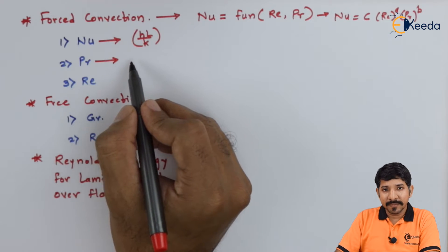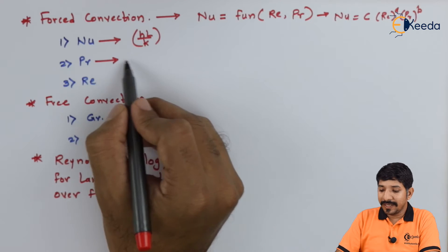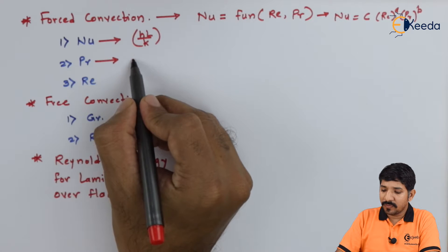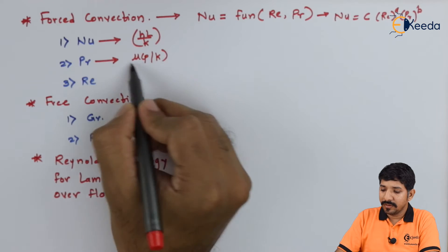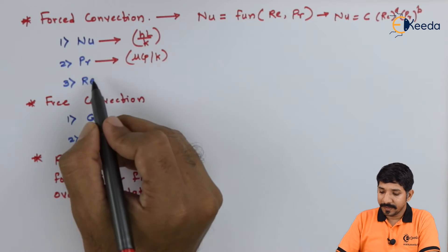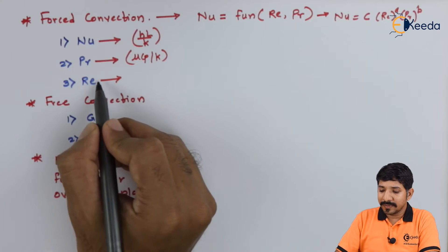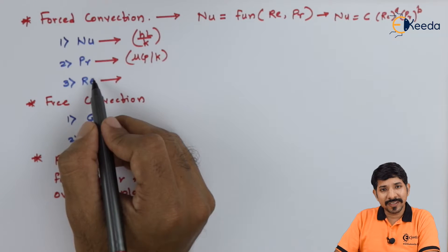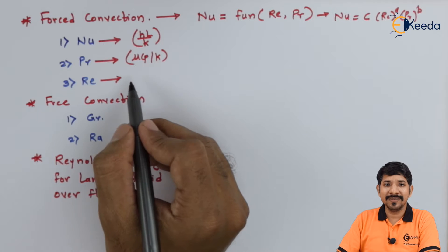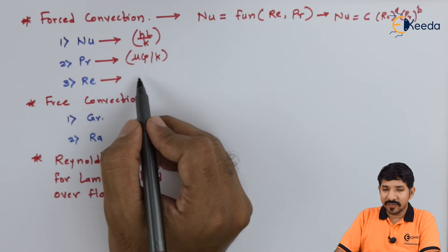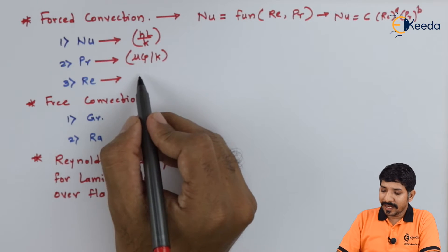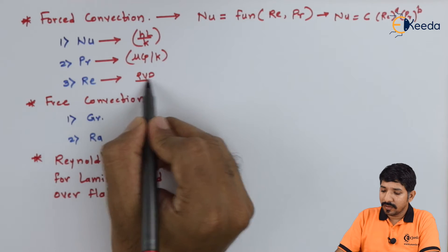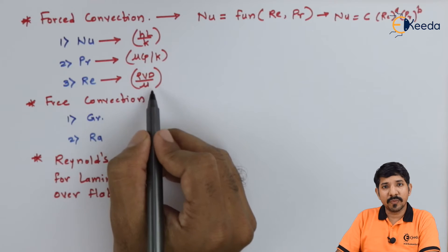The Prandtl number is the ratio of momentum diffusivity to thermal diffusivity, with formula mu×Cp/K. The Reynolds number, studied previously in fluid dynamics, is the ratio of inertial force to viscous force, with formula rho×V×d/mu.